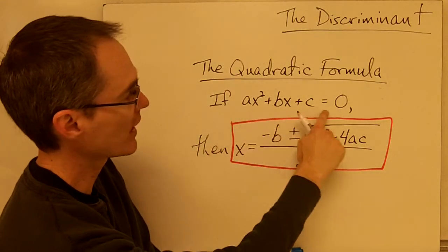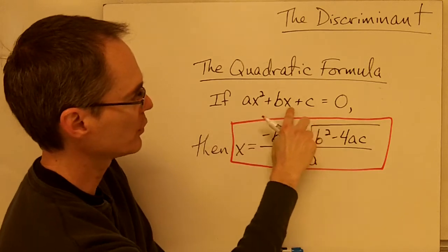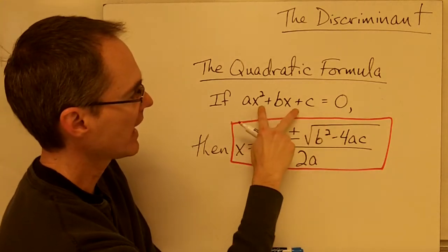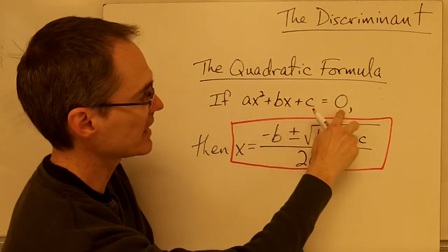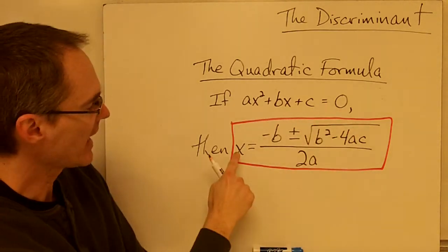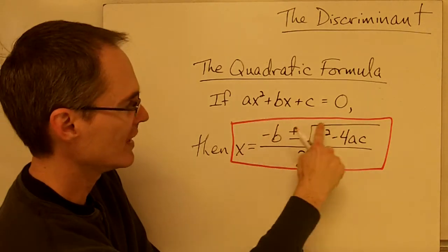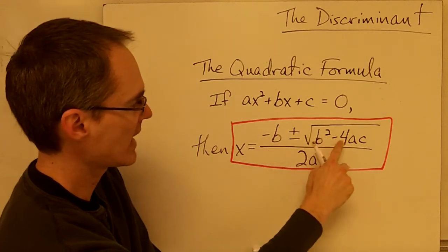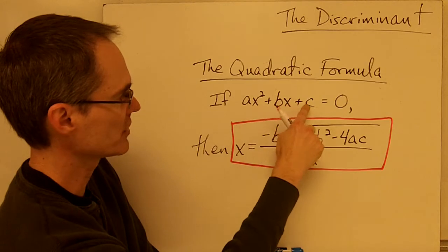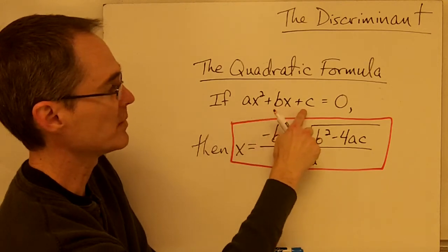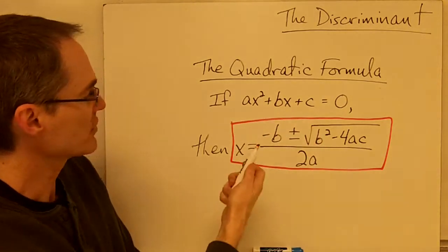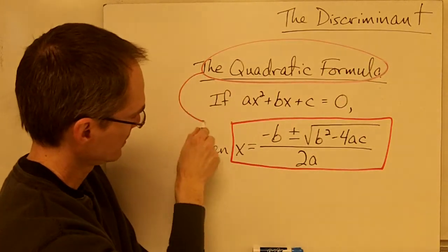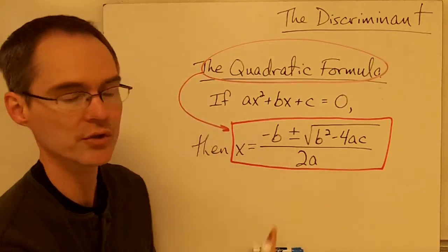If you have a quadratic equation in standard form — which is the standard form of a quadratic expression — and it's set equal to 0, then x is going to be equal to the quadratic formula, which involves coefficients a, b, and c. The quadratic formula is this big, somewhat complex expression.